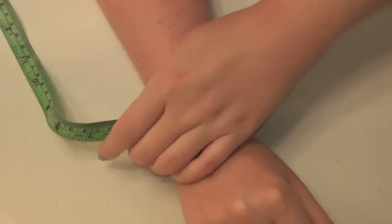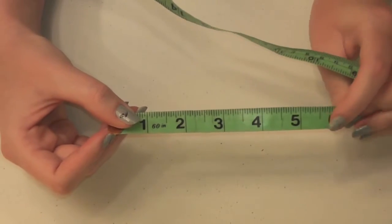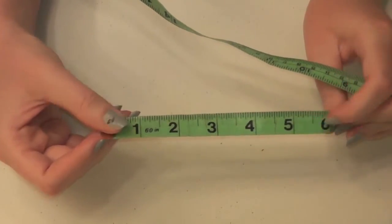Begin by wrapping a tape measure around your wrist and then subtract one inch from that number. My wrist is six inches so I'll use five inches for my measurement.